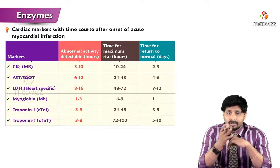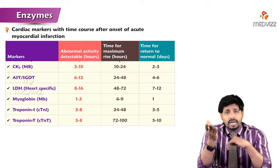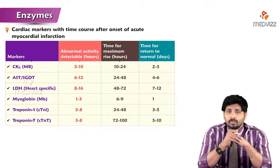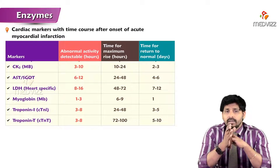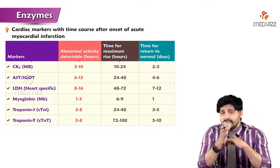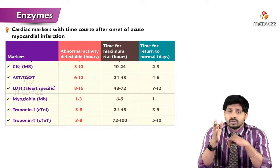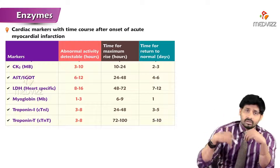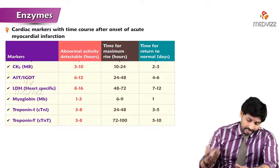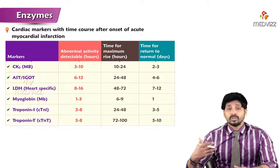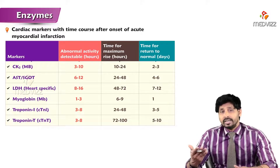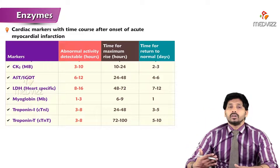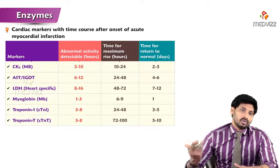Myoglobin is a non-enzyme specific marker: detectable at 1 to 3 hours, peak at 6 to 9 hours, returns to normal within one day. Troponin I and troponin T — both peptides — are elevated at 3 to 8 hours, maximum peak at 24 to 48 hours or 70 to 100 hours, and it takes 5 to 10 days to return to normal levels. So CK2, AST, LDH, myoglobin, and cardiac troponins I and T are all analyzed when a person is admitted to the ICU for myocardial infarction.